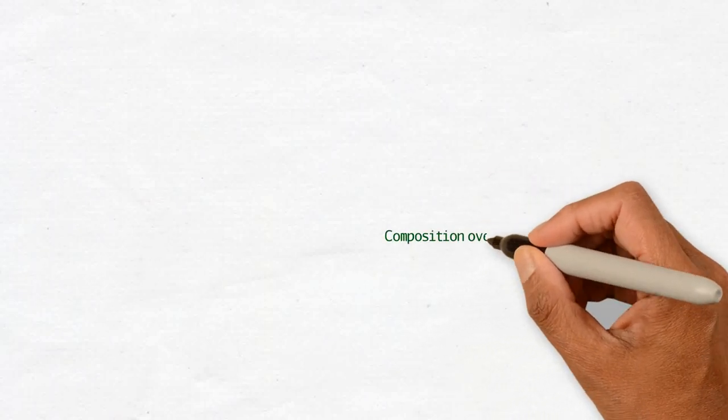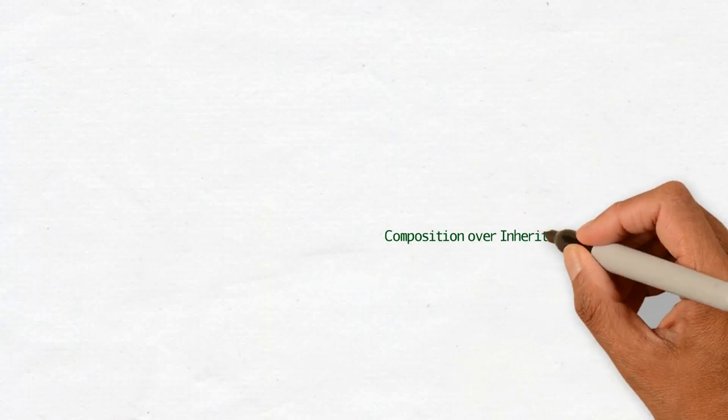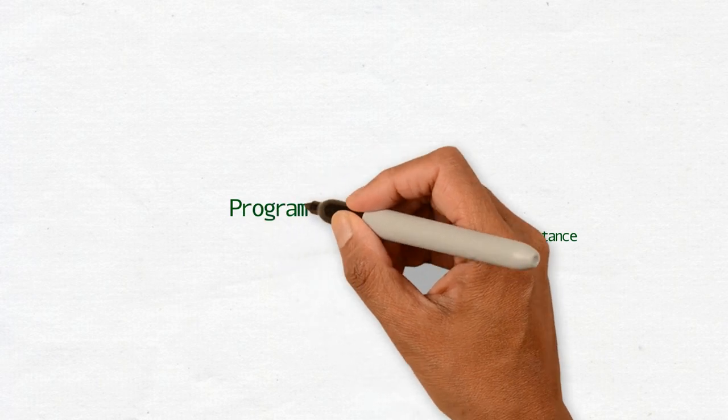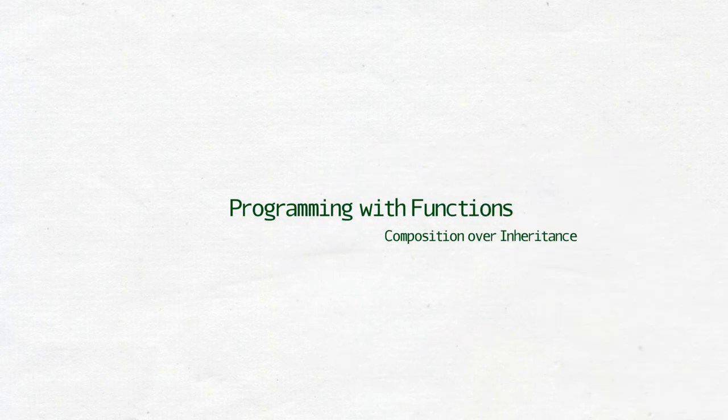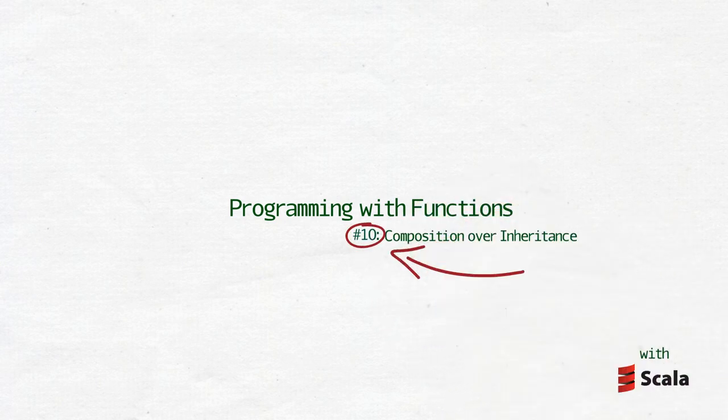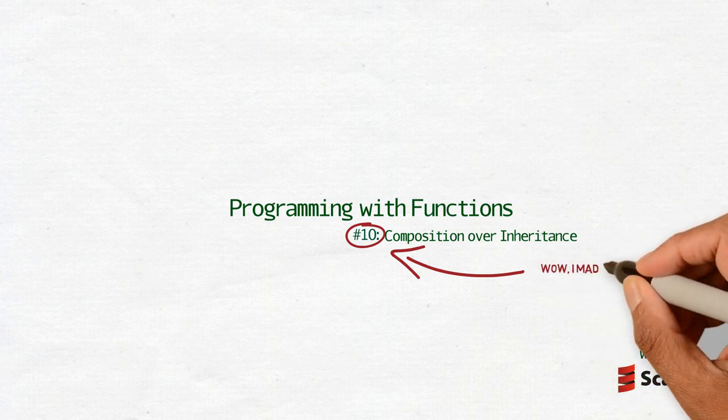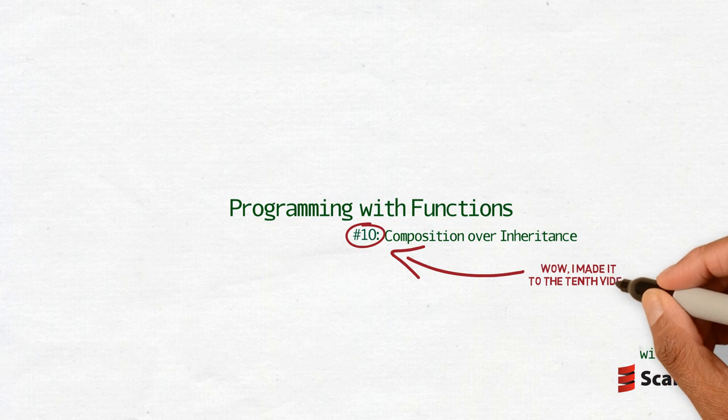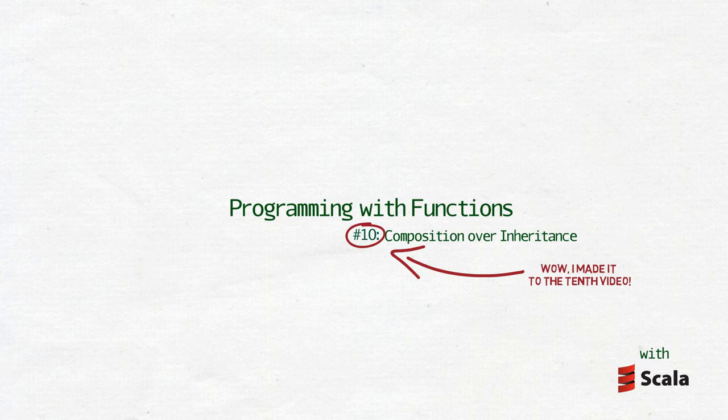Composition over inheritance. This topic is a bit on the verge of what we consider the scope of functional programming. You might have used both in writing object-oriented code before. You might have also written functional code and use composition without even considering it. The reason why I put this topic here as the last entry of my video series about functional programming is that I associate its rise in popularity in recent years to the disillusionment in object-oriented circles and the general rise in popularity of functional programming concepts. I may be wrong in this, but anyway.